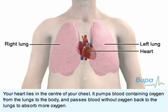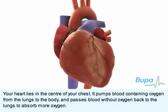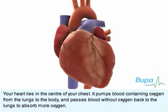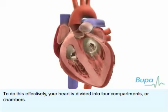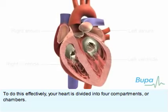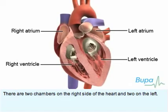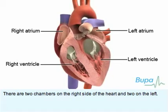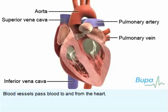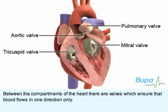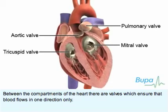Your heart lies in the centre of your chest. It pumps blood containing oxygen from the lungs to the body and passes blood without oxygen back to the lungs to absorb more oxygen. To do this effectively, your heart is divided into four compartments or chambers. There are two chambers on the right side of the heart and two on the left. Blood vessels pass blood to and from the heart. Between the compartments of the heart there are valves, which ensure that blood flows in one direction only.